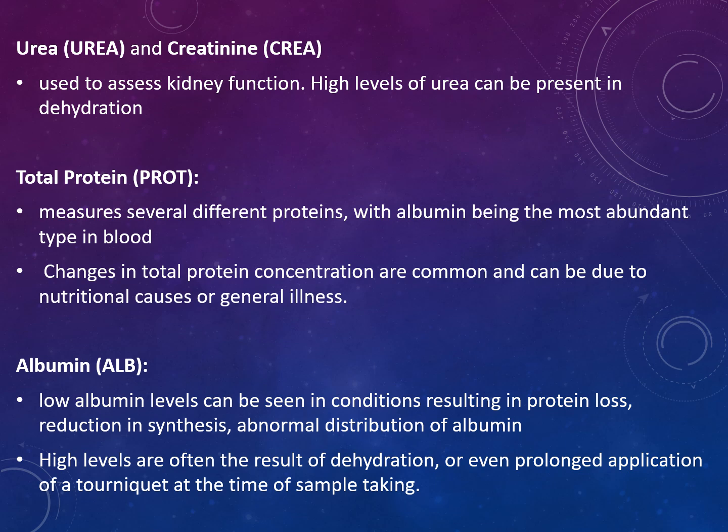You also have the urea and creatinine test, which is used to assess kidney function. High levels of urea can be present in dehydration. Total protein measures several different proteins, with albumin being the most abundant type in the blood. Changes in total protein concentration are common and can be due to nutritional causes or general illness. Albumin can also be measured separately. Low albumin levels can be seen in conditions resulting in protein loss, reduction in synthesis, or abnormal distribution of albumin. High levels are often a result of dehydration or prolonged application of a tourniquet at the time of sample collection.